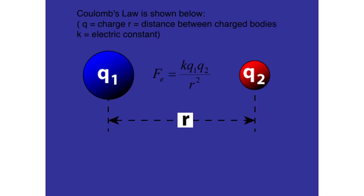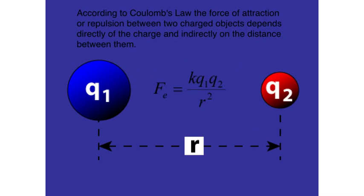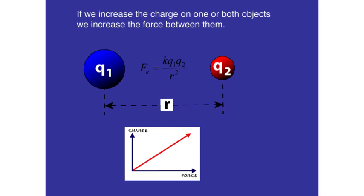Coulomb came up with a law to explain what was happening. And he said that the force between two objects depends upon the charge, which is denoted by q, and the distance between the two objects. According to Coulomb's law, the force of attraction or repulsion depends directly on the charge, but indirectly on the distance between them. If we increase the charge on one or both objects, we increase the force between them, and that's a direct relationship.